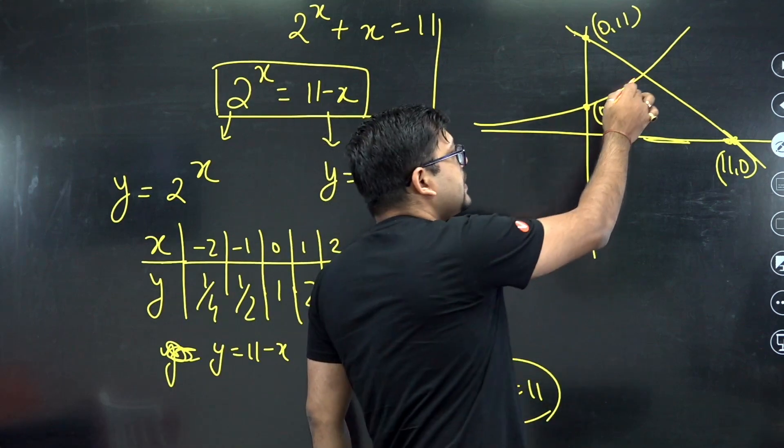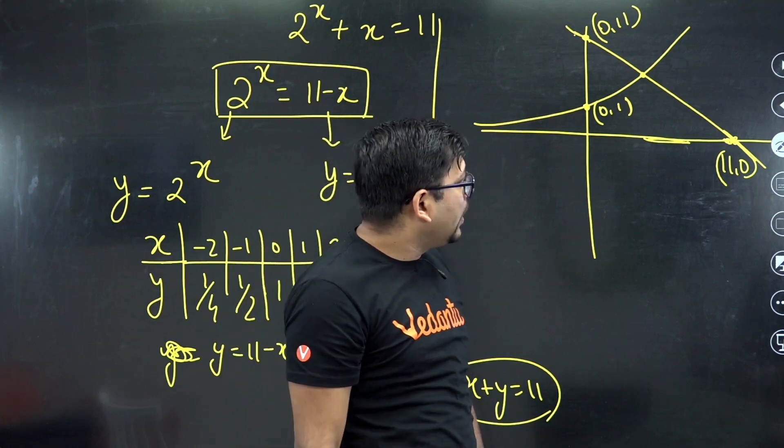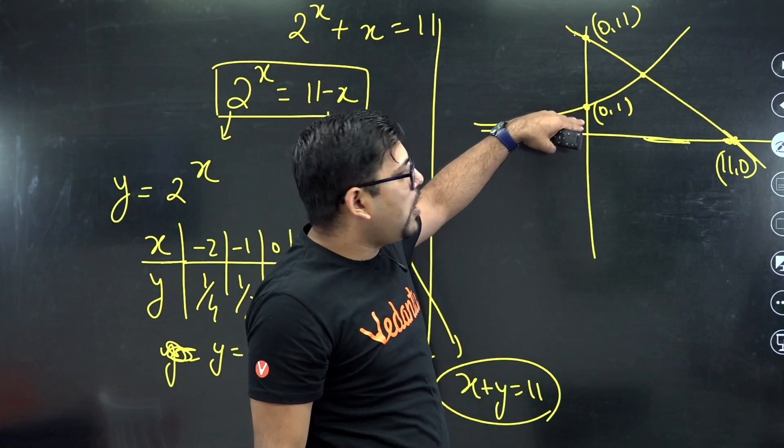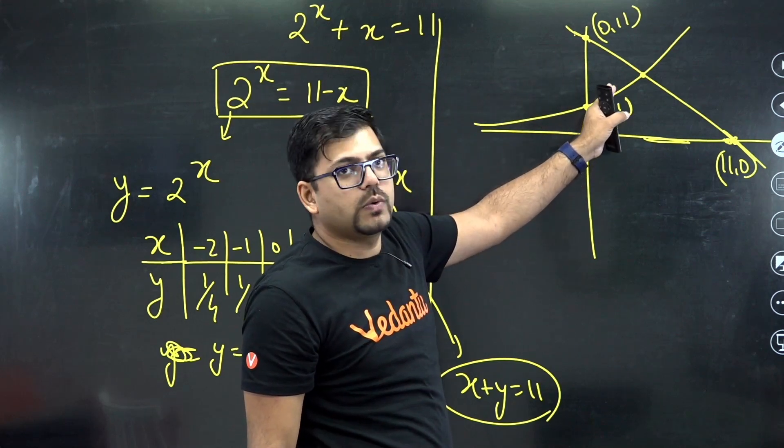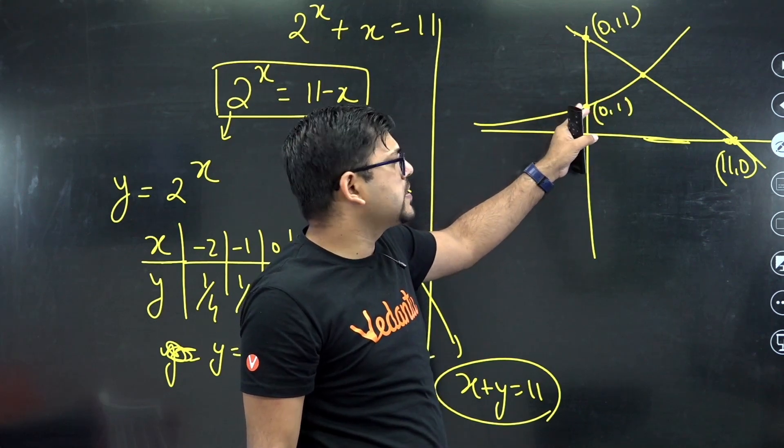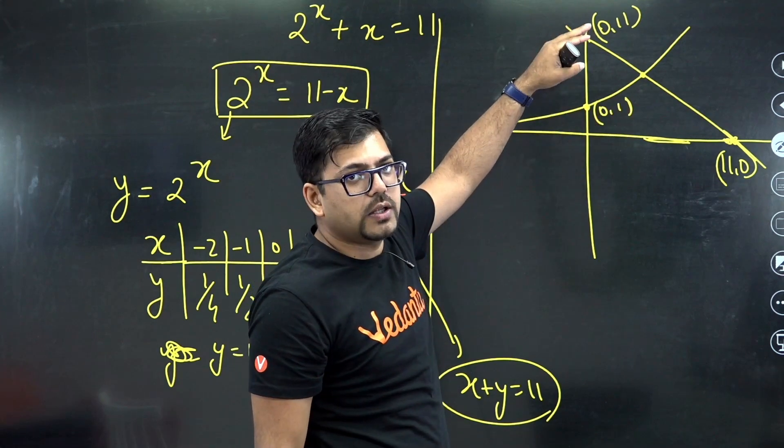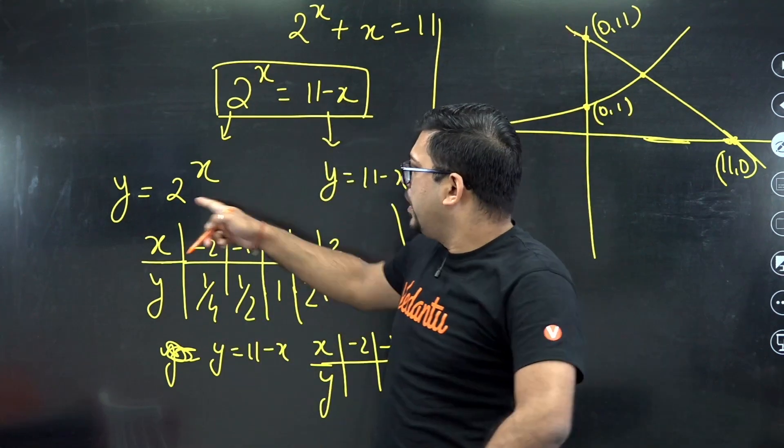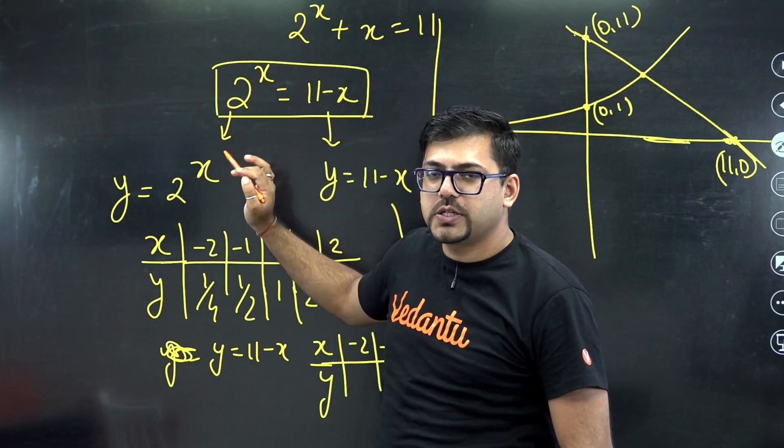So one thing is very clear: this one point is going to be the solution. Now that one point is obviously above y equals 1 and more than x equals 1, or you can say more than x equals 0 to be very precise. So x equals 0, more than x equals 0 is going to be the solution.